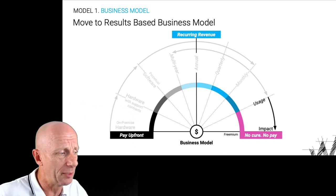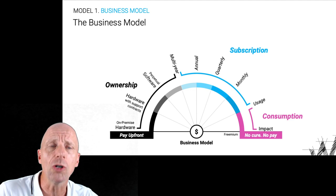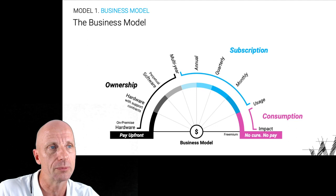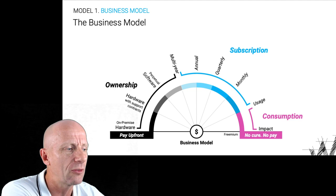If I go further to the right, you see the freemium model. This gives us the final picture: in black, ownership-based business models; in blue, subscription-based business models; and in pink, consumption-based business models. That leads us into the first series of findings — I'm going to share with you some things we have learned about these models.